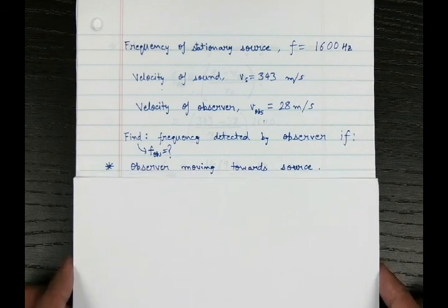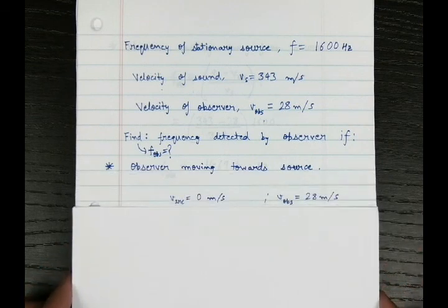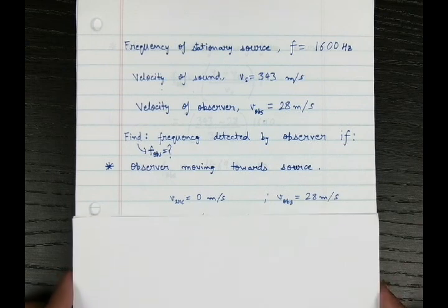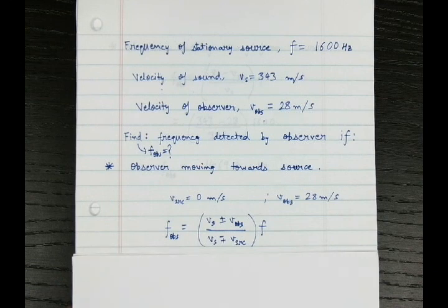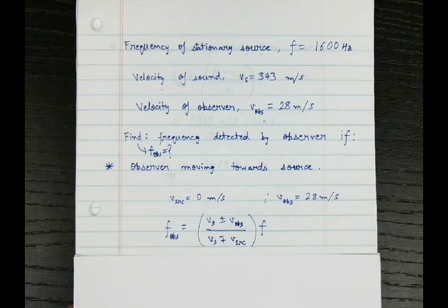For the first case, the observer is moving towards the source. The source is at zero velocity and the observer is moving at 28 meters per second towards the source. Using the Doppler equation: when the observer and source are moving towards each other, we take a plus sign in the numerator and a minus sign in the denominator. When they are moving away from each other, we take a minus sign in the numerator and a plus sign in the denominator.